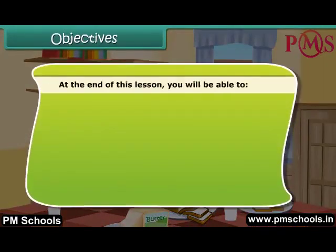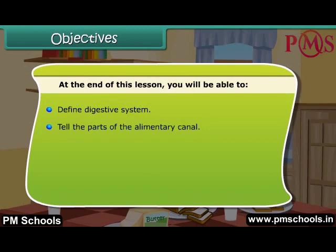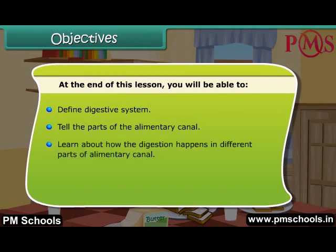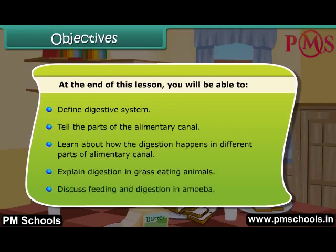Objectives: At the end of this lesson you will be able to define the digestive system, tell the parts of the alimentary canal, learn about how digestion happens in different parts of the alimentary canal, explain digestion in grass-eating animals, and discuss feeding and digestion in amoeba.